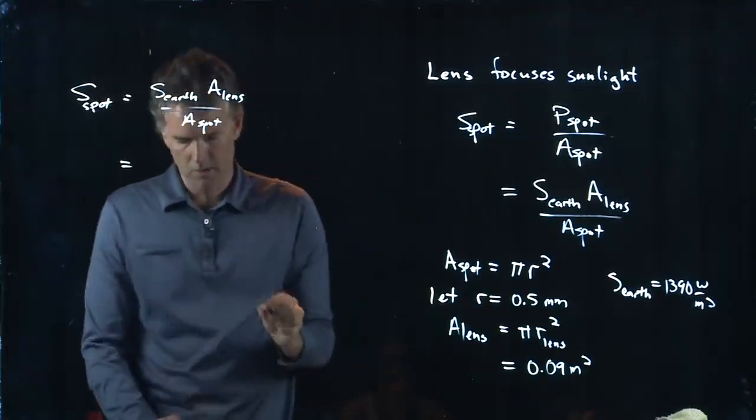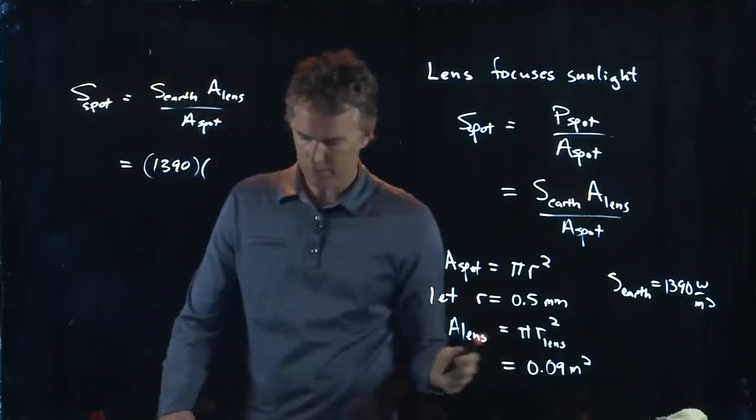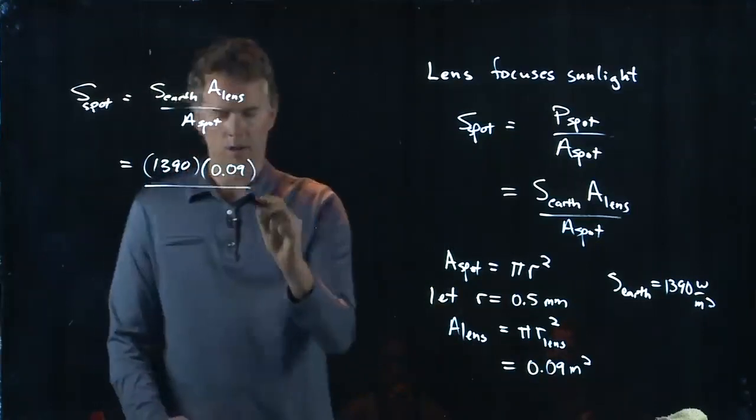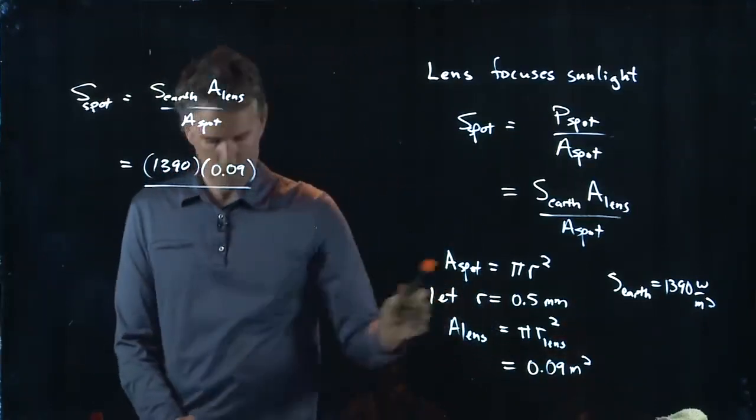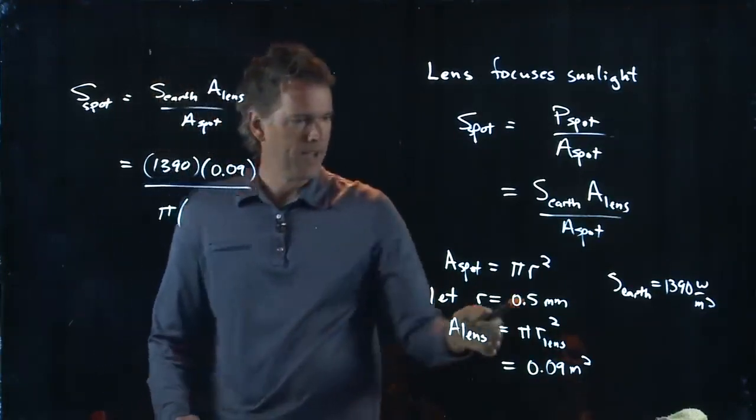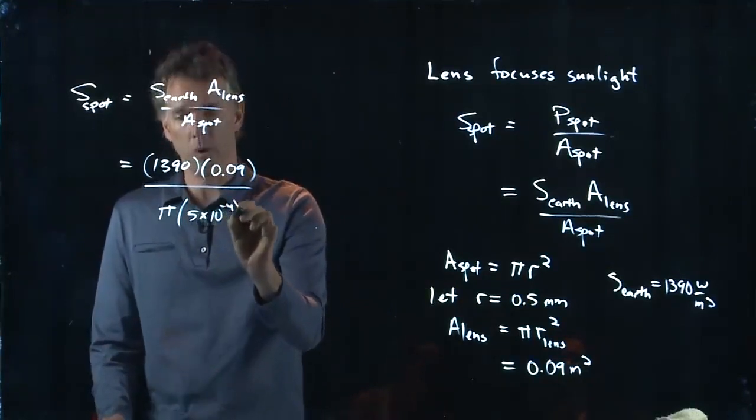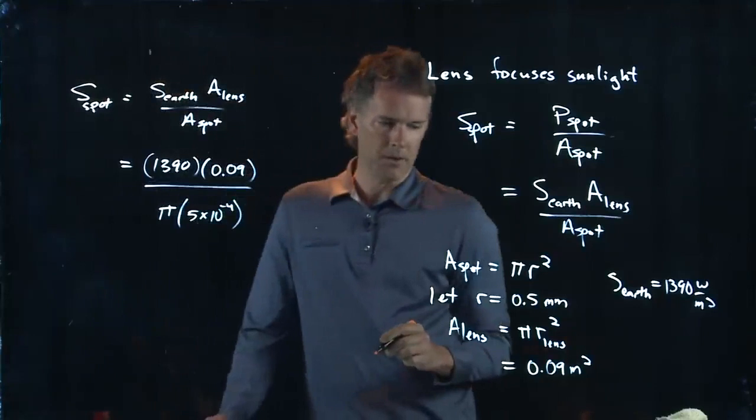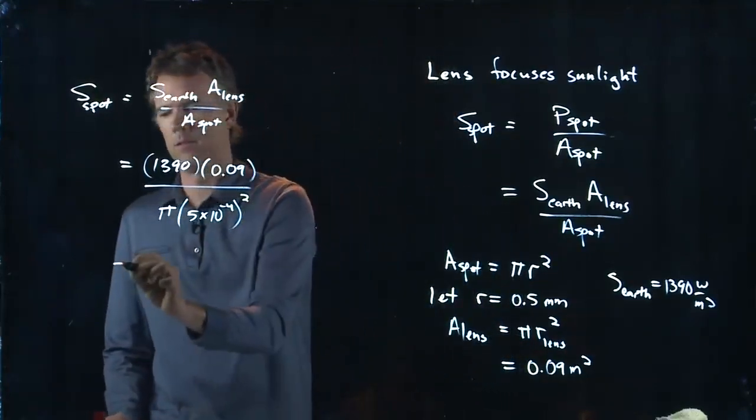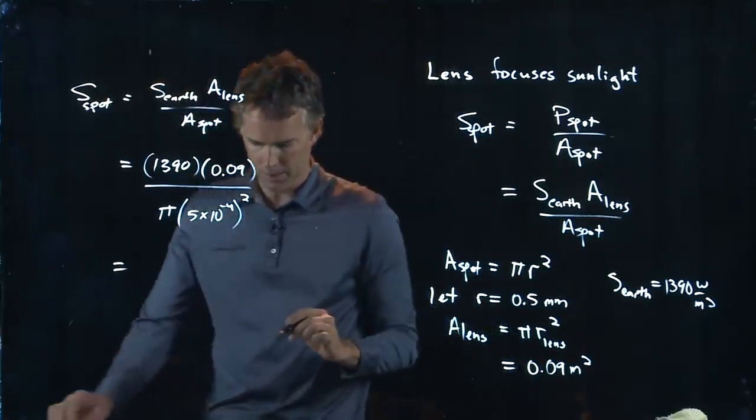And S at the earth we said was 1390. Area of our lens we said was 0.09. We're all in SI units here. And then we need a pi r squared for this guy, so we have pi times a half a millimeter is 5 times 10 to the minus 4 meters. And we got to square that thing. So if you punch in all those numbers, tell me what you get.